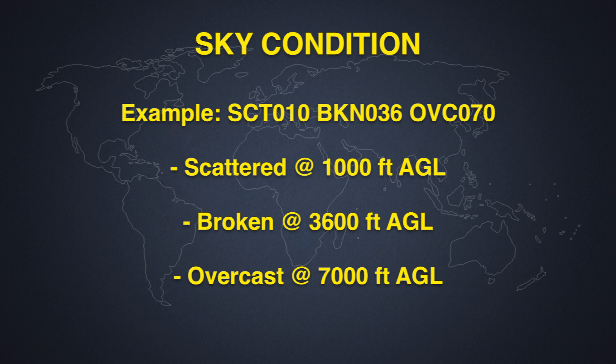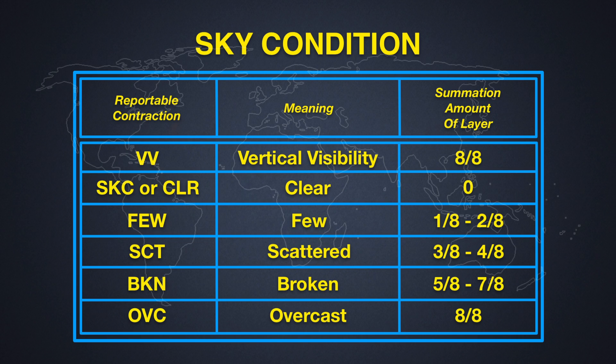Let's take a look at the codes so you have a better understanding. You've got VV which is vertical visibility, SKC or CLR which is clear, FEW which is few clouds, SCT is scattered, BKN is broken, and OVC is overcast. The summation amount of layer is basically broken into eight quadrants — that's how it is measured as to whether it's FEW, scattered, broken, or overcast.